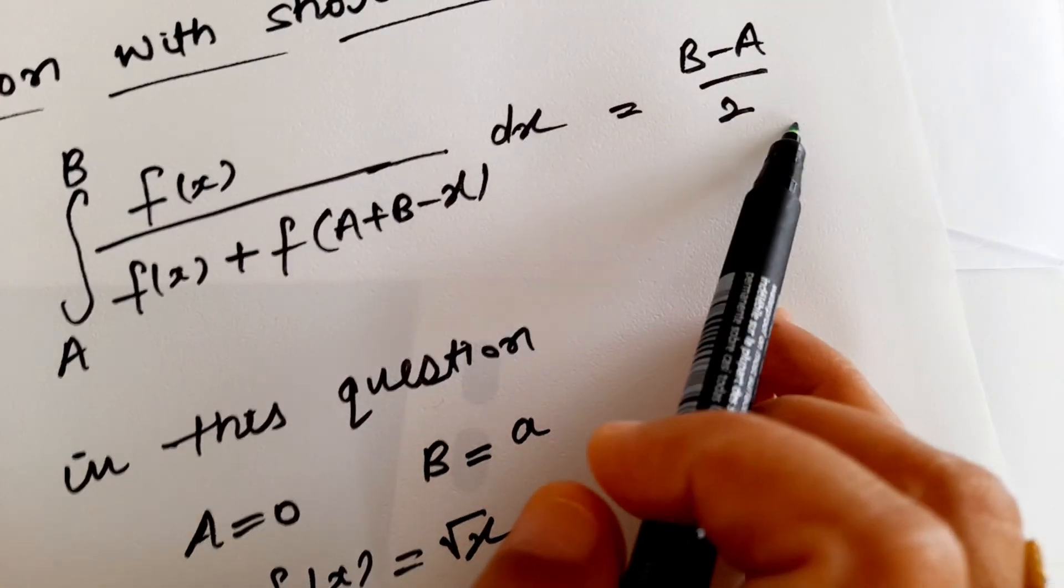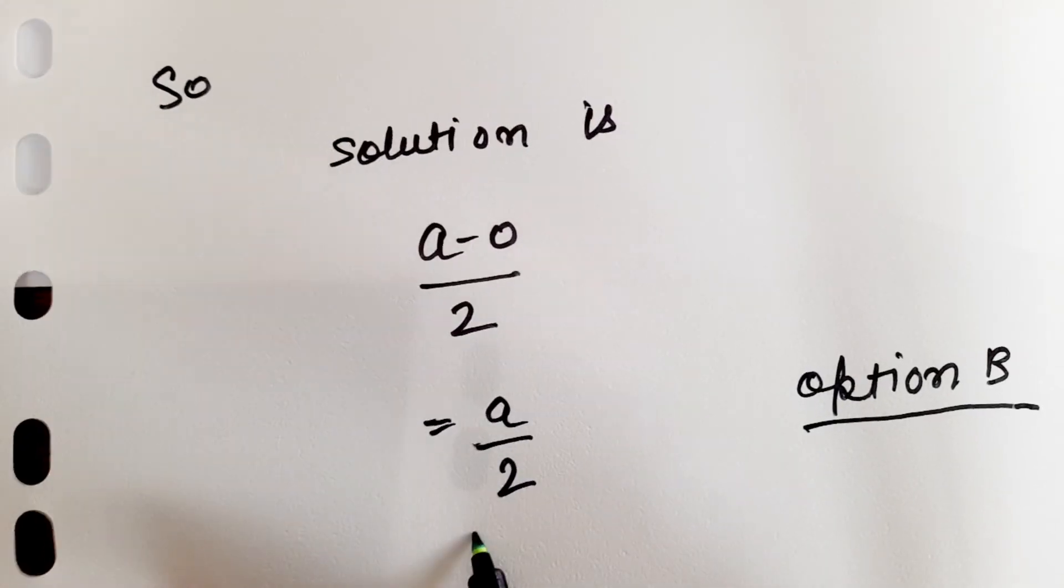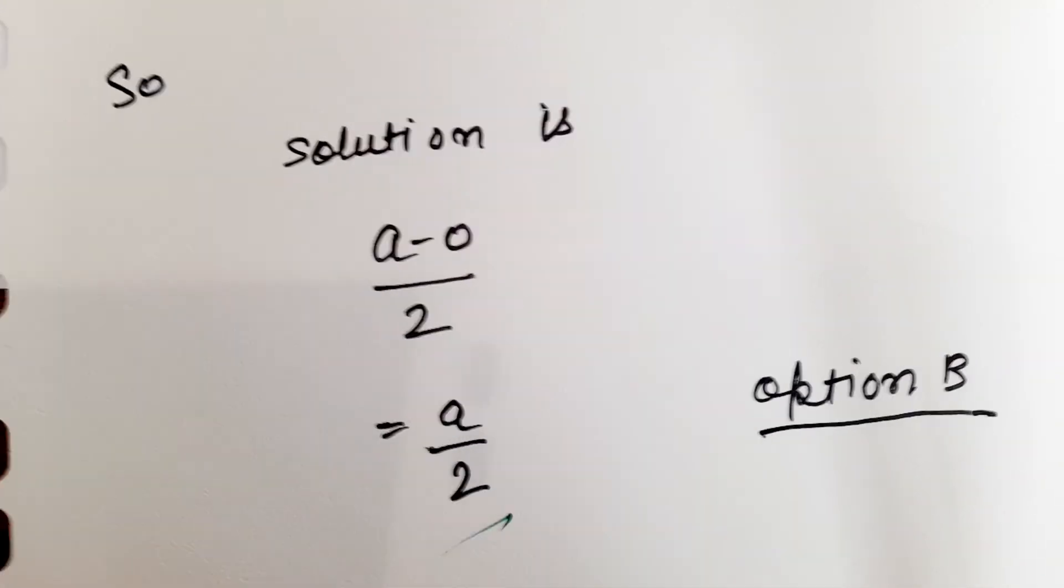We have b minus a upon 2. This means we have a minus 0 upon 2, and the answer is a by 2. That means option B is correct.